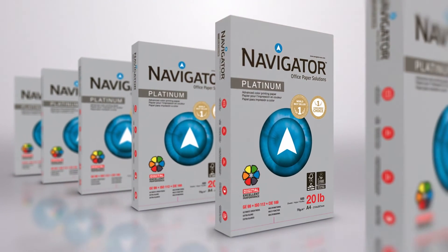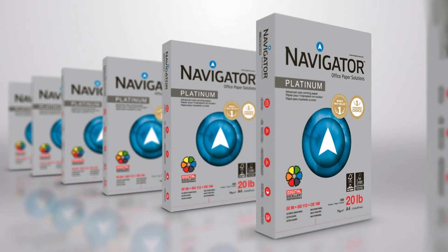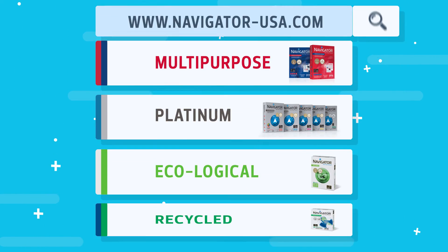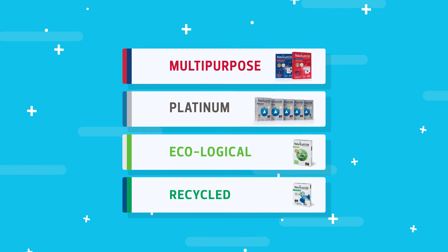Navigator Digital Platinum is available in various sizes and ways. Go to www.navigator-usa.com to check out the complete Navigator paper range.